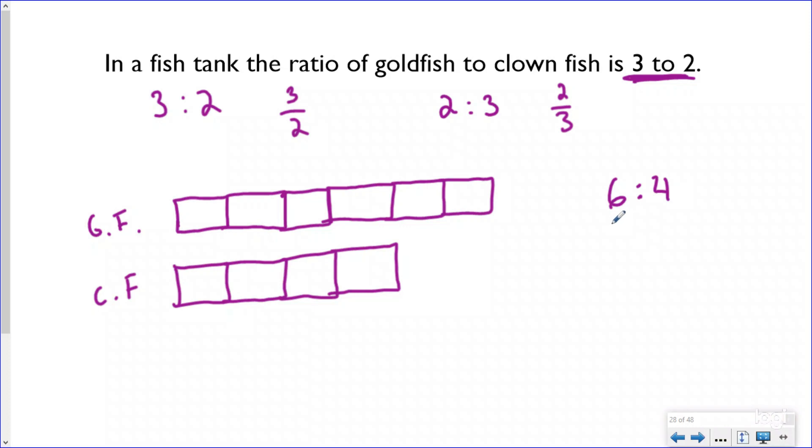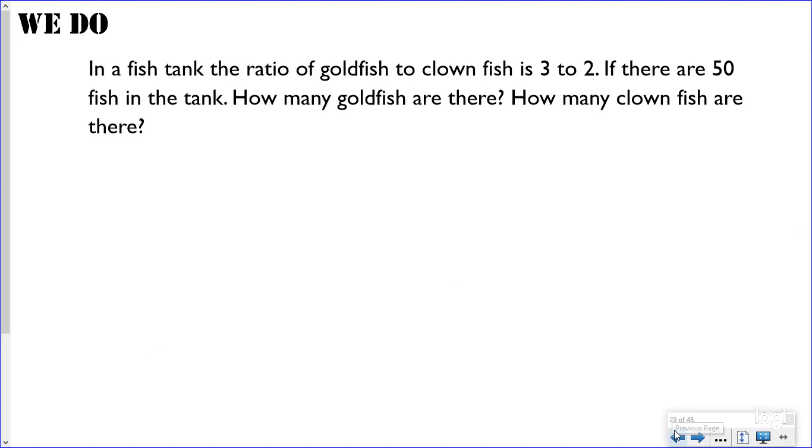Here we have the same exact problem but with two different questions being asked. It says in a fish tank the ratio of goldfish to clownfish is 3 to 2. If there are 50 fish in the tank, how many goldfish are there, and how many clownfish are there? Down here I'm gonna write my two statements: there are blank goldfish and there are blank clownfish.